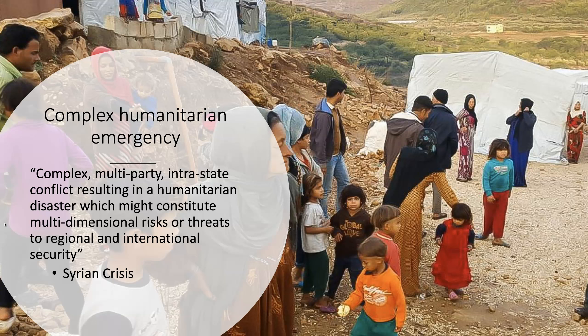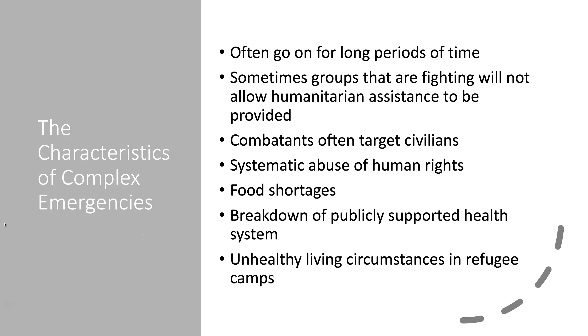A complex humanitarian emergency is a complex multi-party interstate conflict resulting in a humanitarian disaster which might constitute multi-dimensional risks or threats to regional and international security — one example being the Syrian crisis. These emergencies often go on for long periods; fighting groups may not allow humanitarian assistance, combatants often target civilians, there is systematic abuse of human rights, food shortages, breakdown of health systems, and unhealthy living conditions in refugee camps.